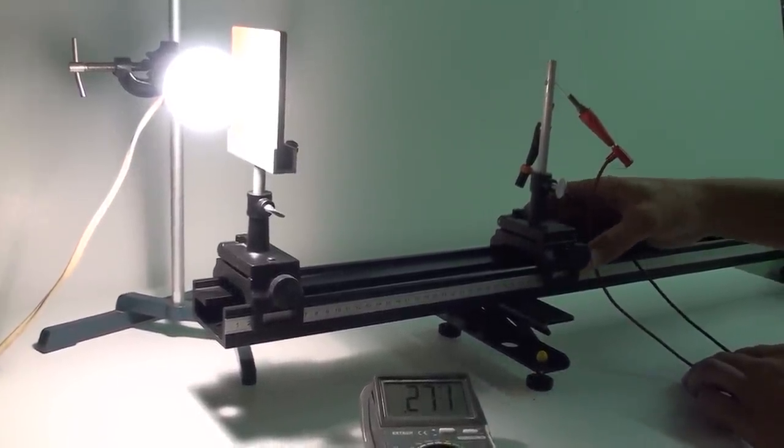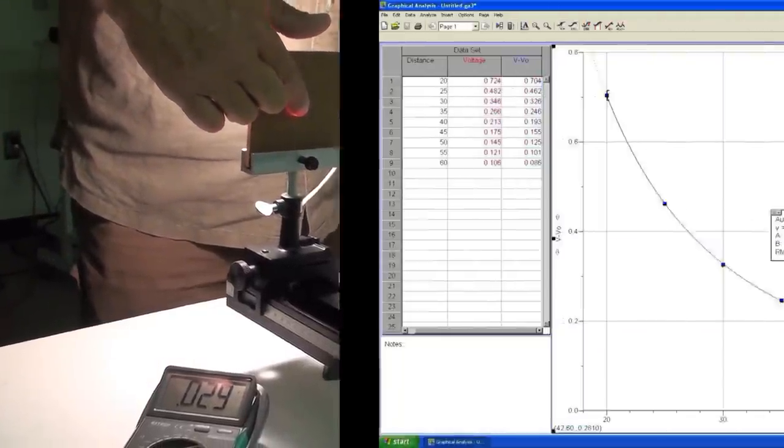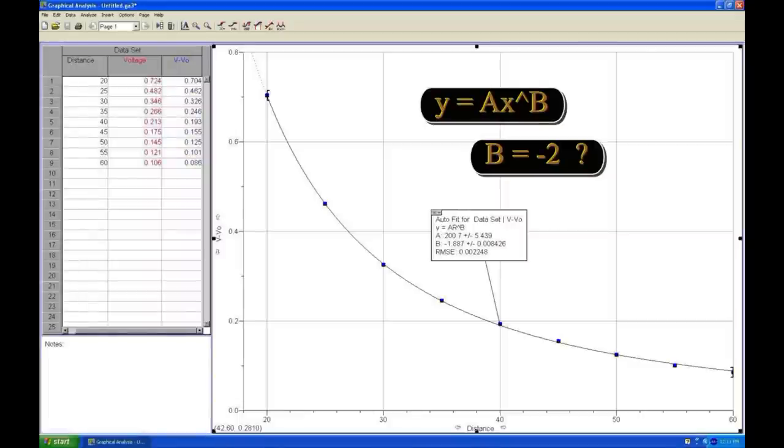Cover the aperture hole and take a reading of the background intensity to be subtracted from all other readings. A plot of intensity versus distance shows the inverse square law. Fit the curve a times x raised to the b power and determine the parameter b. We expect a value of b close to minus 2.